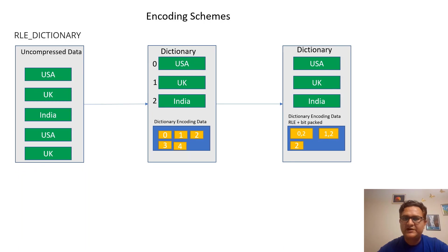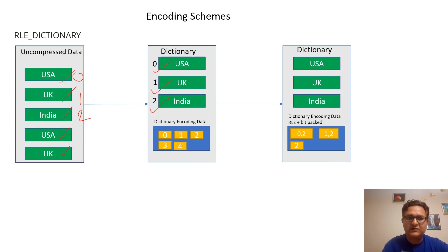This slide discusses encoding schemes. For RLE dictionary encoding, we have taken some countries with duplicate values — USA, UK, India, with USA appearing twice and UK appearing twice. If we put that into a dictionary, we assign 0 for USA, 1 for UK, and 2 for India. The dictionary-encoded data becomes 0, 1, 2, 0, 1, 2, etc. For the encoding data, USA came two times (0 to 2), UK came two times (1 to 2), and India came once. That's how RLE dictionary encoding works.